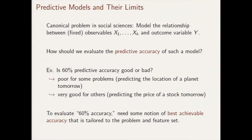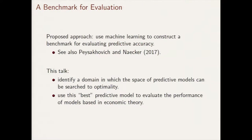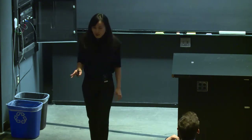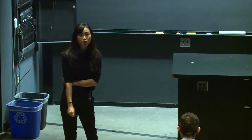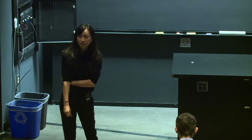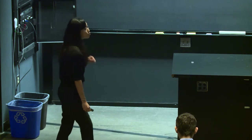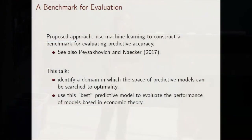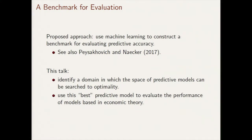How do we come up with such a notion of best achievable accuracy? The proposed approach in our project is to use machine learning to construct such a benchmark. I want to mention that this is also an approach being proposed in some very nice concurrent work by Alex Pesakovich, who gave a talk yesterday, and his co-author Jeff Nacre. What I'll show today is a domain in which the space of predictive models can actually be searched to optimality, meaning there's a very natural best algorithm to construct this benchmark.